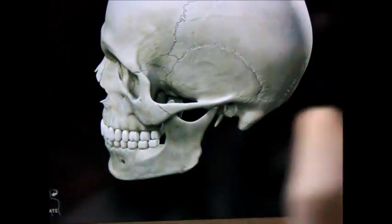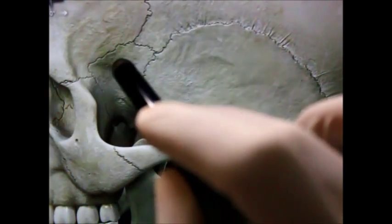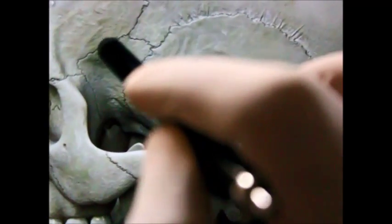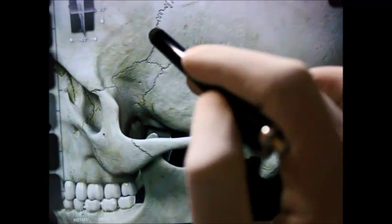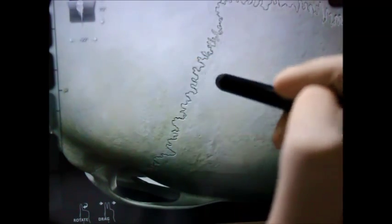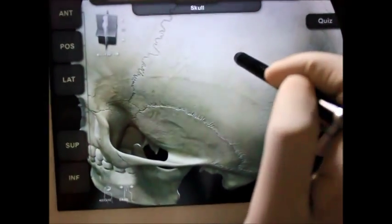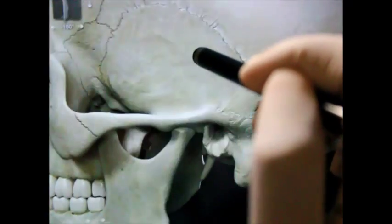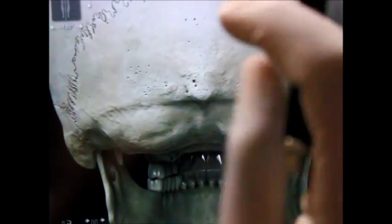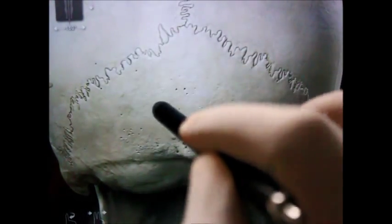We have the temporal bone getting attached anteriorly with the sphenoid and superiorly we can see the frontal bone. This is the part of the coronal suture which joins the frontal bone and parietal bone. Moving more posteriorly we can see the occipital bone and the lambdoid suture joining the occipital bone and parietal bone.